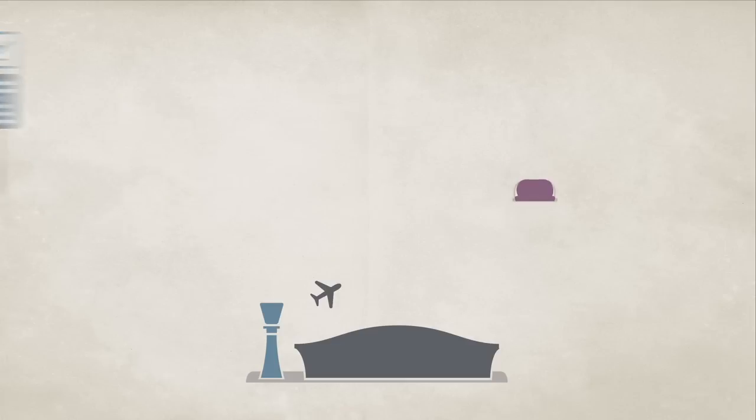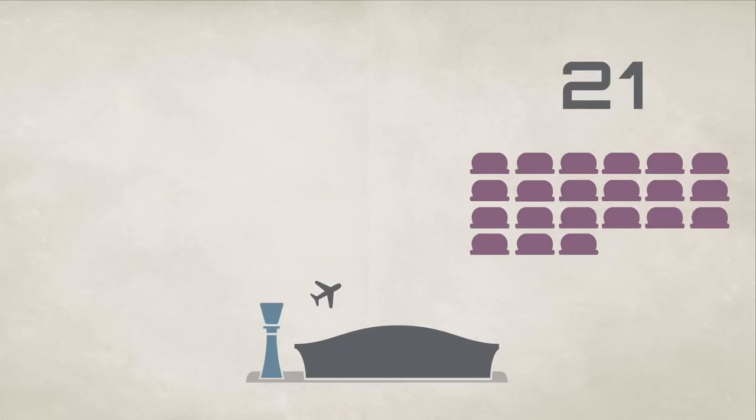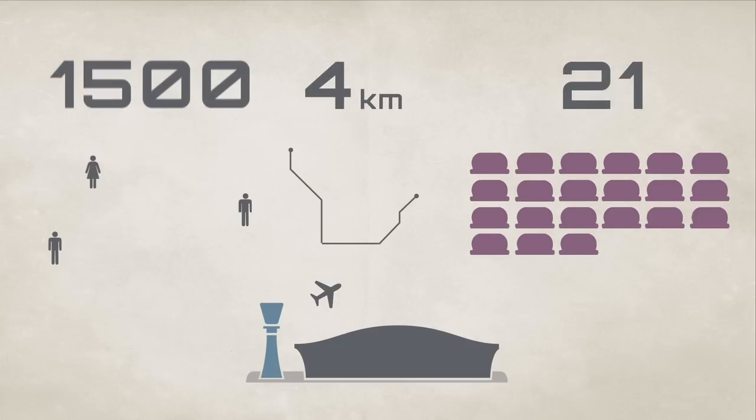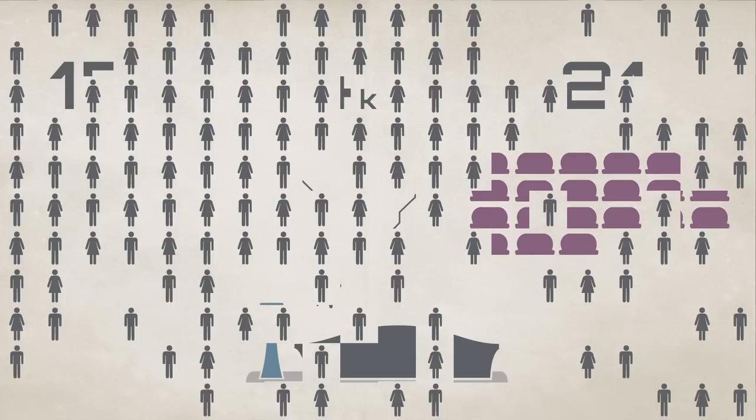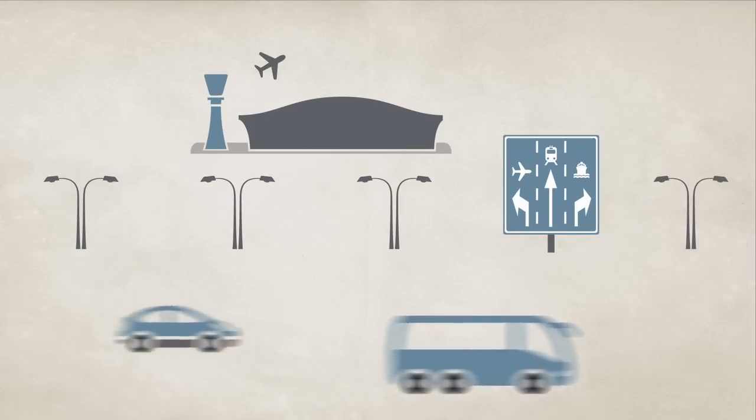In London, 21 vehicles travel through a route of nearly four kilometres, carrying a total of 1,500 passengers a day, substantially improving the traffic conditions in the airport perimeter.